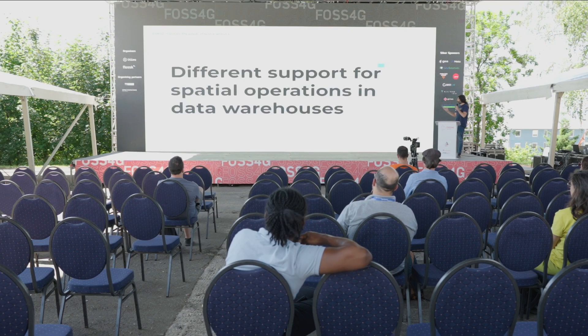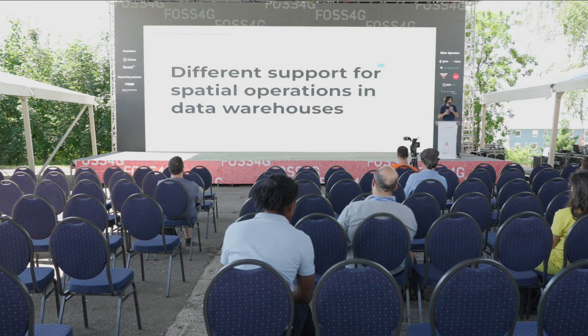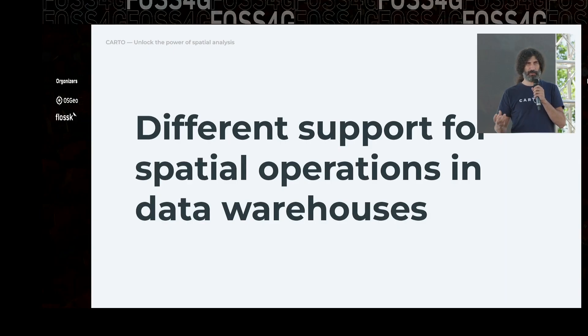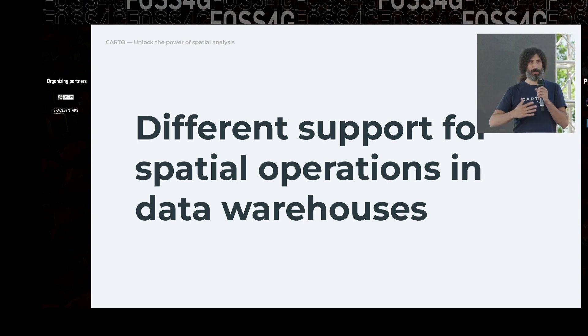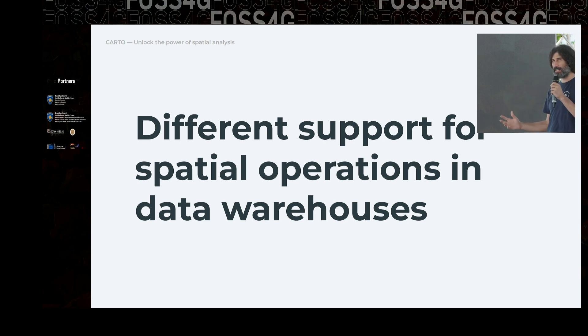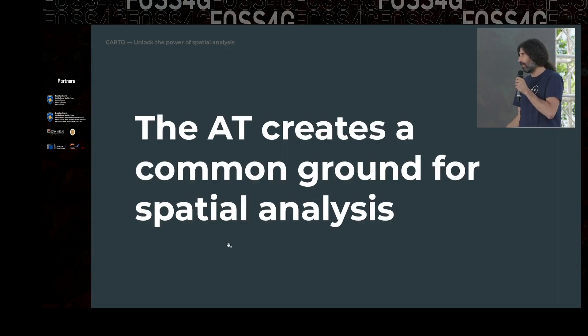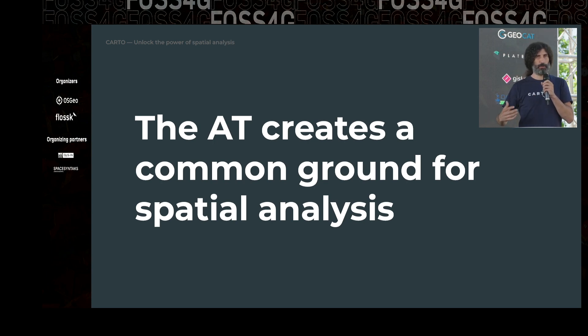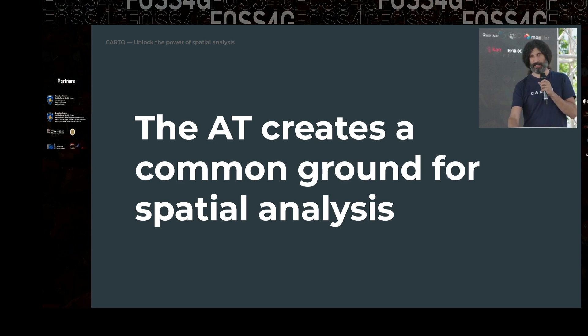Different data warehouses have different levels of support for spatial operations. All of the popular ones support spatial data. If you're familiar with Postgres and PostGIS — Postgres doesn't have support for spatial things natively, but PostGIS adds that: support for native spatial objects and the functions to work on those objects. Most popular data warehouses have support for geographies or geometries, but they don't have such a large array of functions to actually analyze and work on them. So what we do is use that existing support and enhance it by adding the functions that form the analytic toolbox, creating a common ground for spatial analysis — the same functions running across data warehouses.